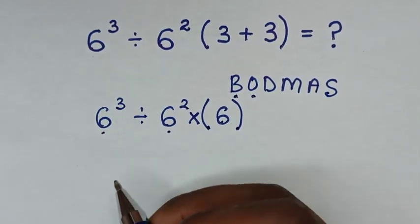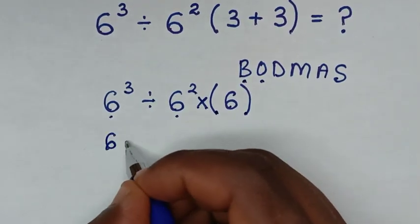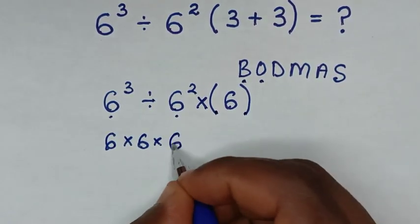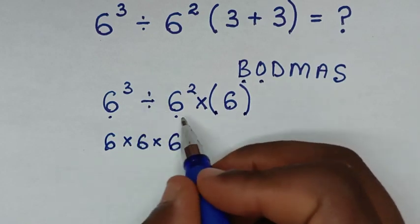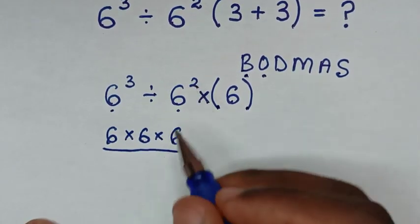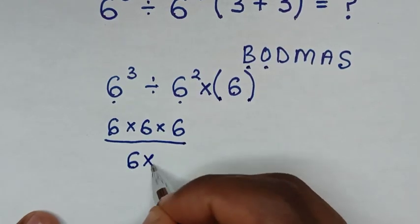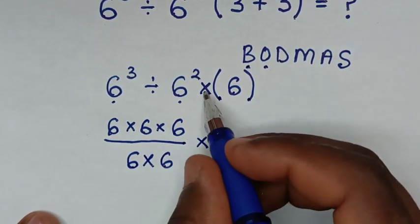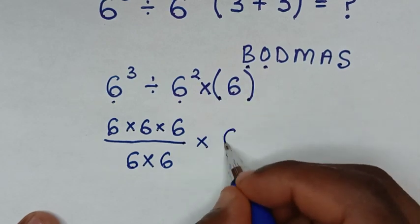From here, 6 power 3 is the same as 6 times 6 times 6. Divide by 6 power 2, which is 6 times 6. Then times this 6.